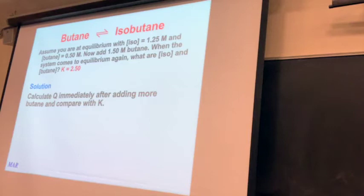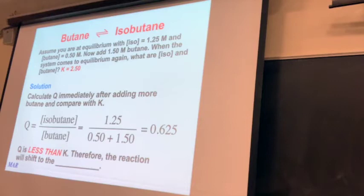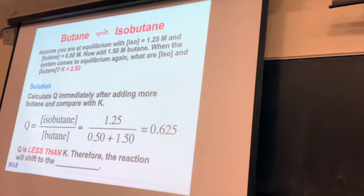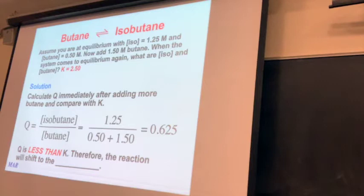Q comes in really handy because it's a way to predict how the reaction should shift. Q is just products over reactants — it looks just like K. The Q value here is 0.625. Since Q = 0.625 is smaller than K = 2.50, this confirms Le Chatelier's principle: in order for Q to become equal to K, you need to make the numerator bigger and/or the denominator smaller — meaning more products and fewer reactants. The reaction will shift to the right.